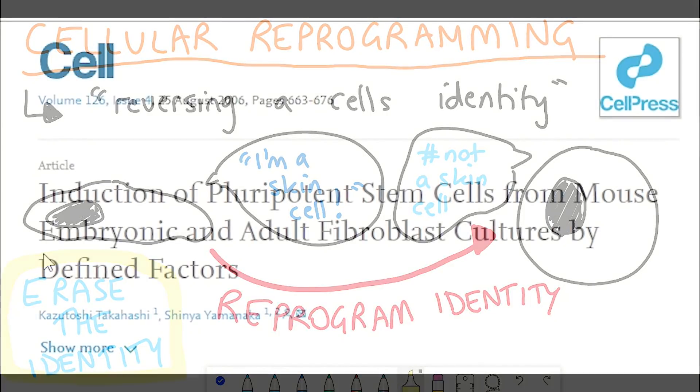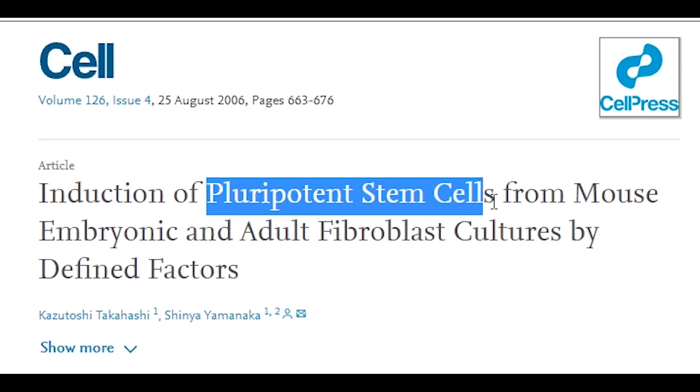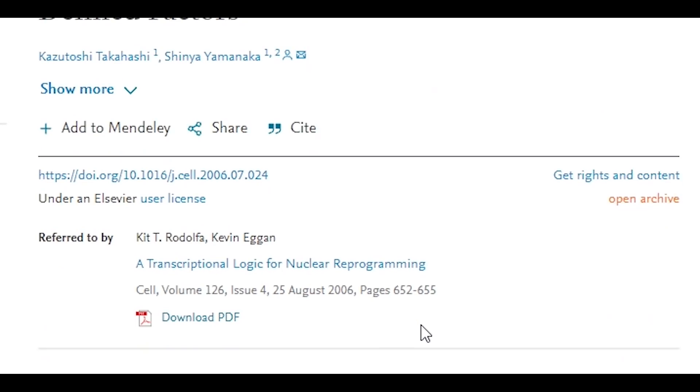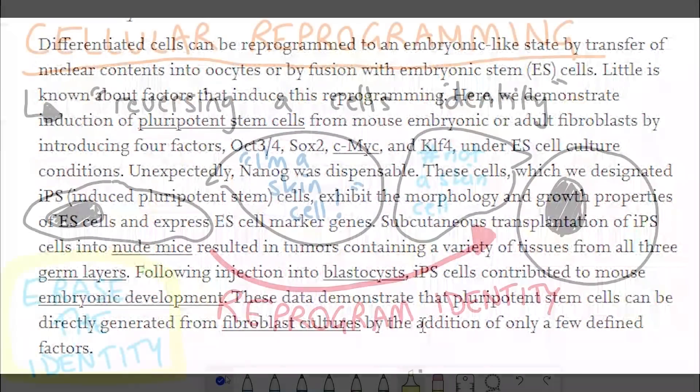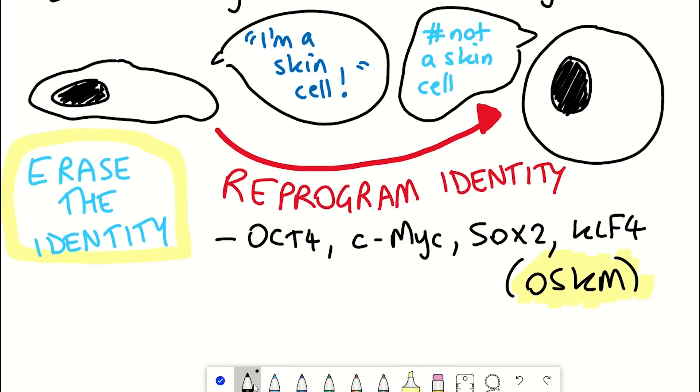For example, the Nobel Prize winning work by Shinya Yamanaka showed that fibroblast cells could be reprogrammed to become pluripotent stem cells - so going from a specialized cell to a stem cell. And this happened when the cells were given four factors: OCT4, SOX2, c-MYC, and KLF4. These are more commonly referred to as the Yamanaka factors, or OSKM, as I may refer to from now on.